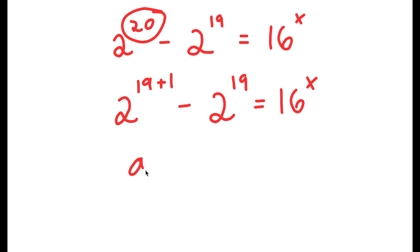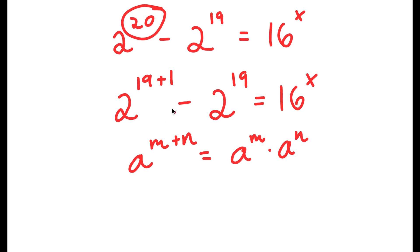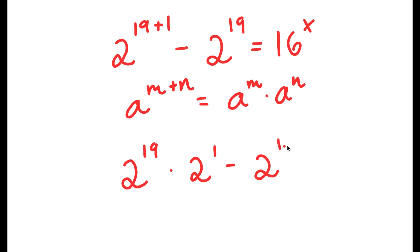If I have something in the form a to the power of m plus n, this is equal to a to the power of m times a to the power of n. So in this case, I have 2 to the power of 19 plus 1, and this is going to equal 2 to the power of 19 times 2 to the power of 1. Now I have this minus 2 to the power of 19 is equal to 16 to the power of x.